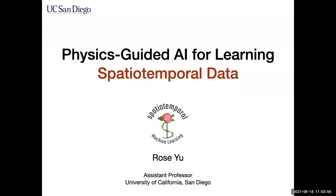Let me introduce everyone to Rose Yu. Rose is an assistant professor at UC San Diego in the Department of Computer Science and Engineering. She was a postdoc fellow at Caltech and earned her PhD in computer science at USC. Her research focuses on advancing machine learning techniques for large-scale spatiotemporal data analysis with applications to sustainability, health, and physical sciences, with a particular emphasis on physics-guided AI. She has won faculty research awards from Google, Amazon, and Adobe, has several best paper awards, a best dissertation award from USC, and was nominated as one of MIT's rising stars in EECS.